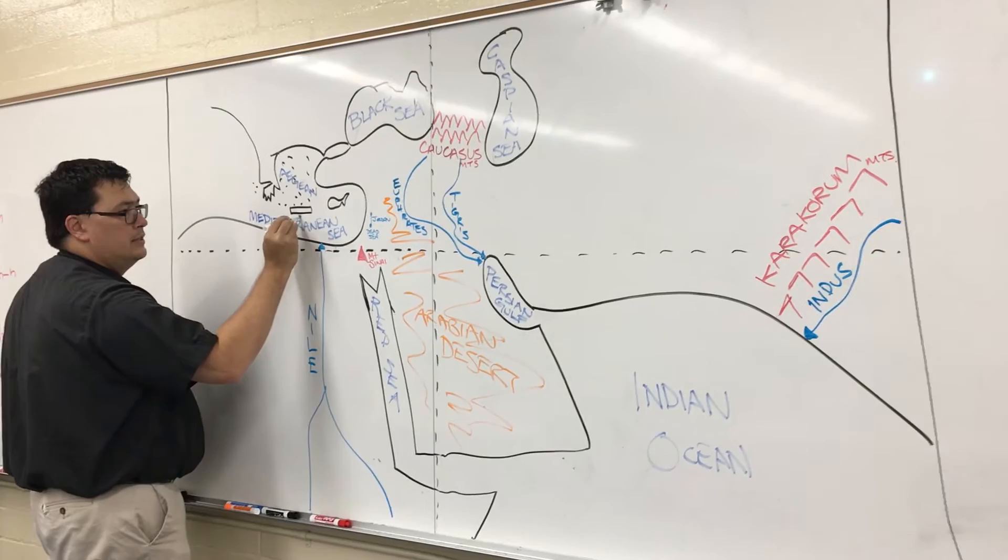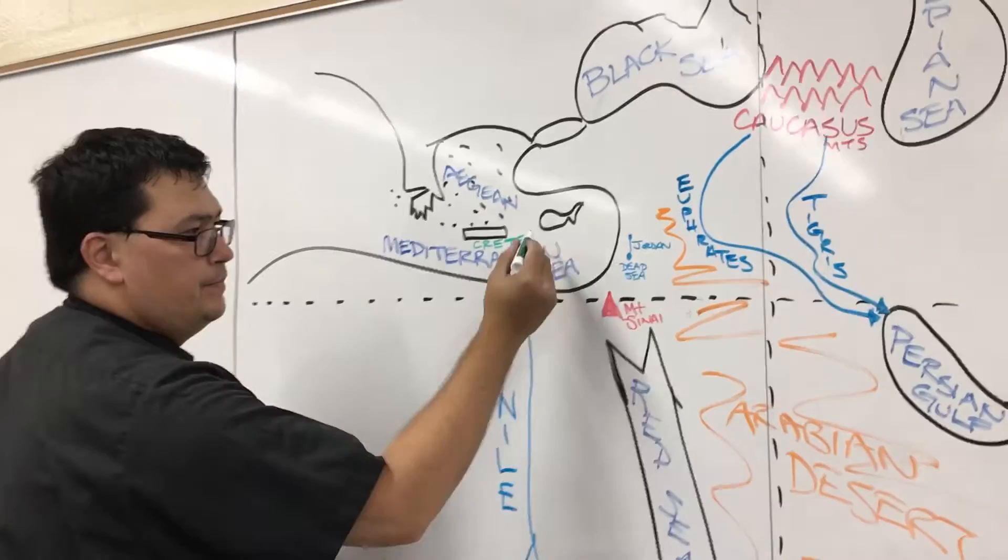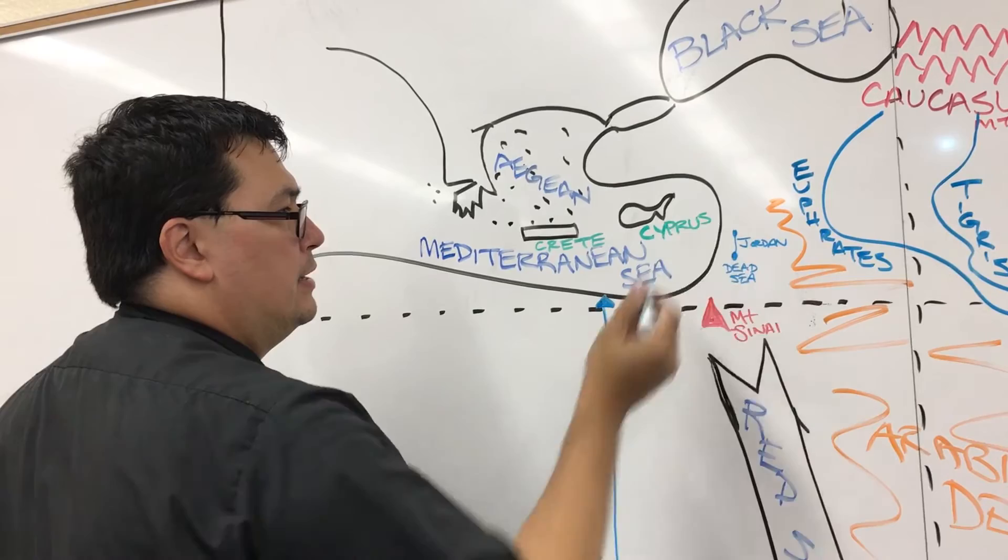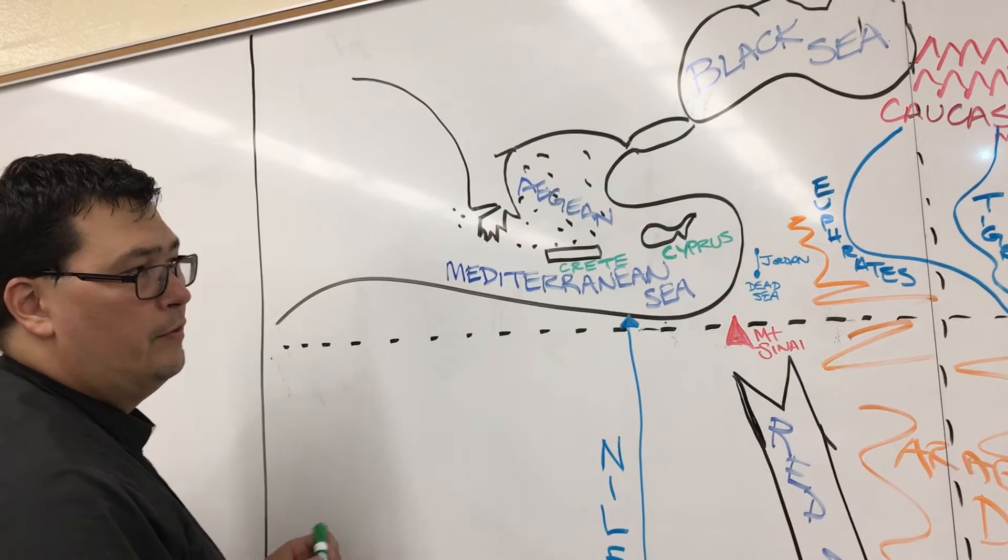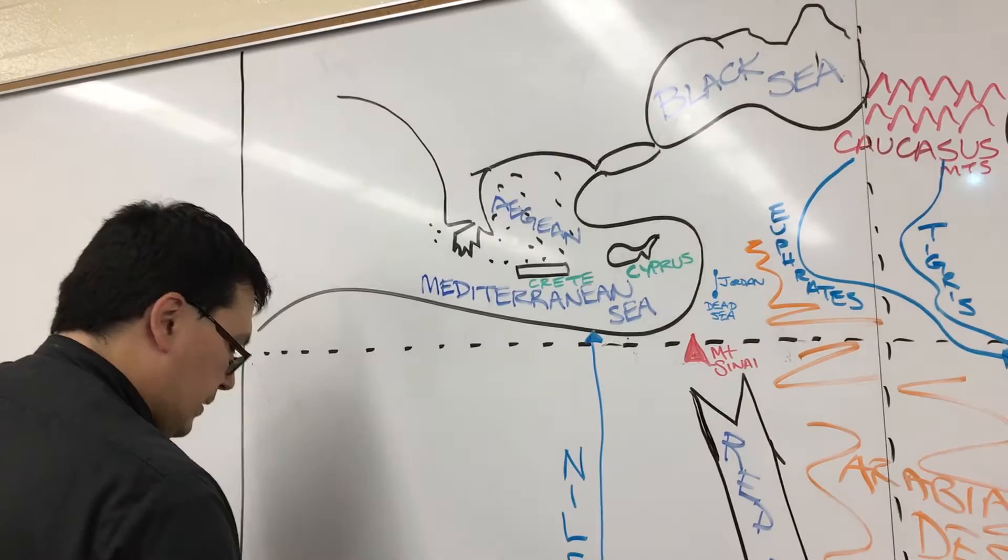We have two islands. The first is this short, flat one here. This is the island of Crete. C-R-E-T-E. Crete. And the other goldfish-shaped island is Cyprus. C-Y-P-R-U-S. So Crete and Cyprus. And they're in alphabetical order. C-R comes before C-Y.